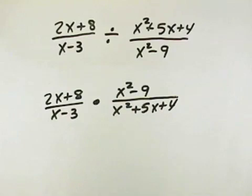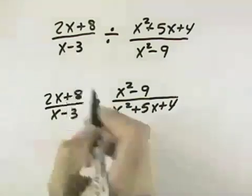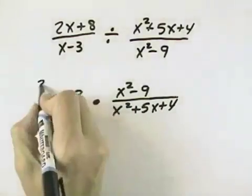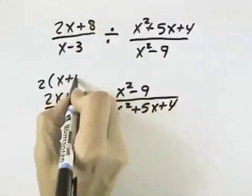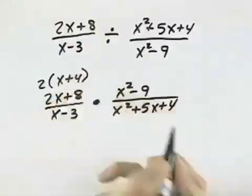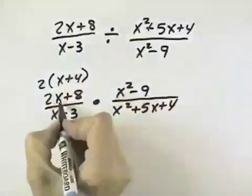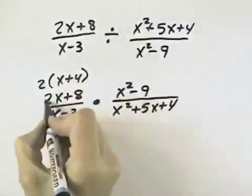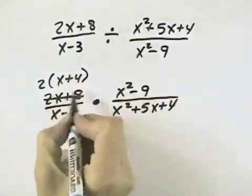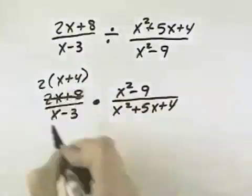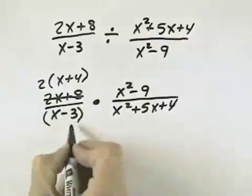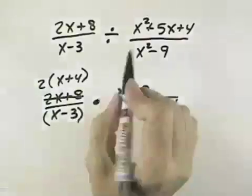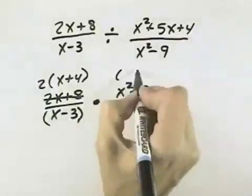But before we do the multiplication, we want to cancel like factors if we can. In order to do that, we need to factor. So we can take the greatest common factor out of this numerator, to have 2 times (x + 4). x minus 3 cannot be factored, which means it is one factor in itself.